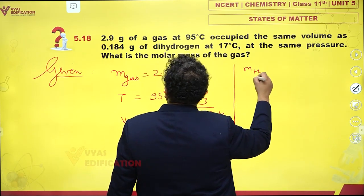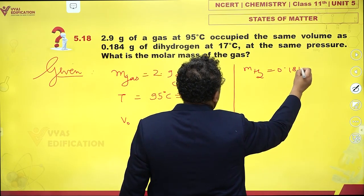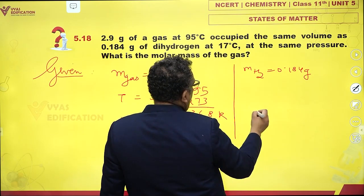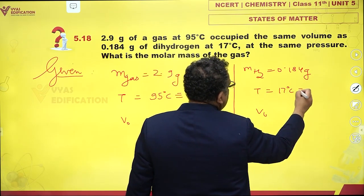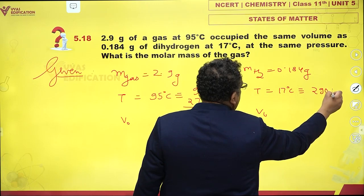Mass of hydrogen as 0.184 grams, volume is V naught, temperature is 17 degrees Celsius, which is 290 Kelvin.